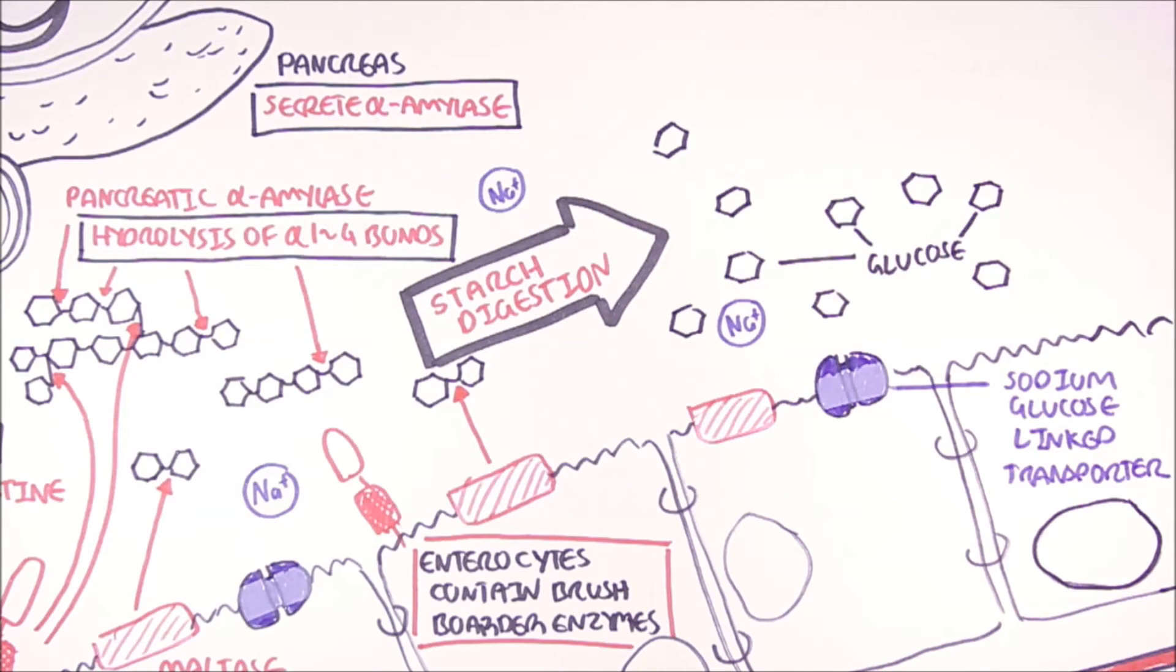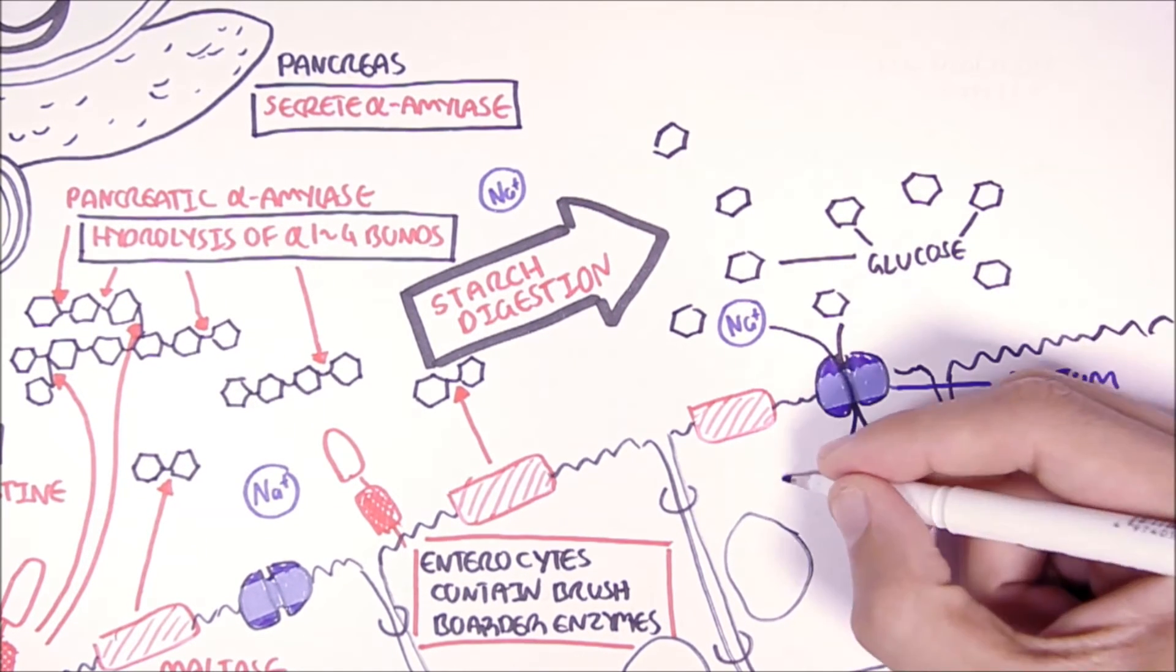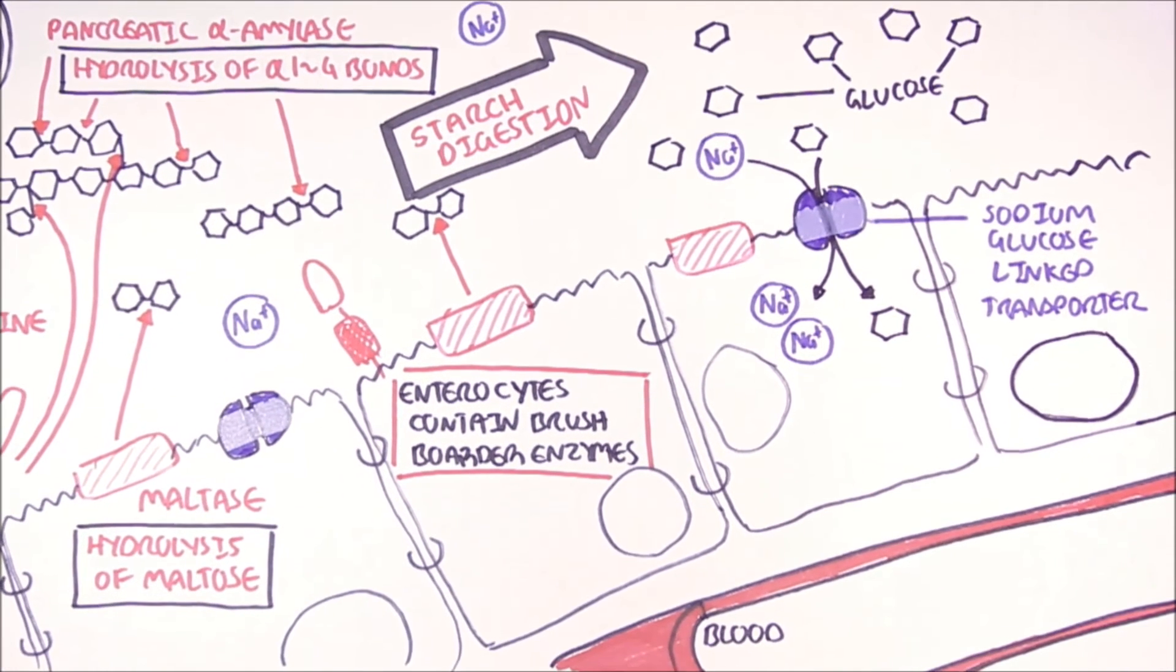These sodium-glucose-linked transporters are found on the apical surface of the enterocytes, so on the top. And what they do is that they function as a co-transporter for both sodium and glucose. Two sodium ions will enter for one glucose molecule.